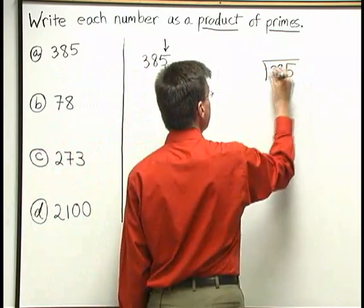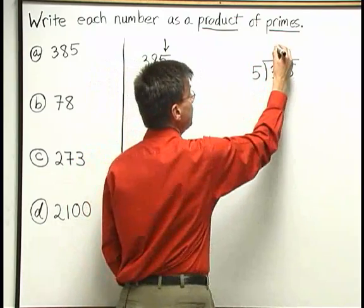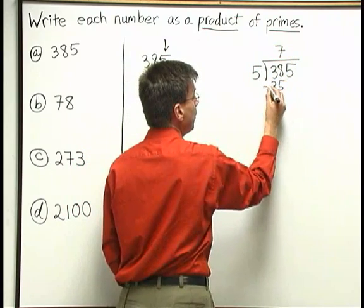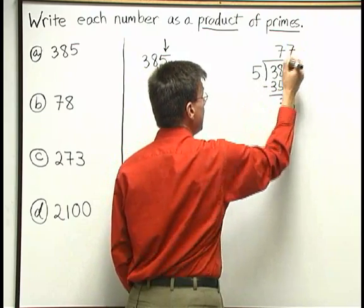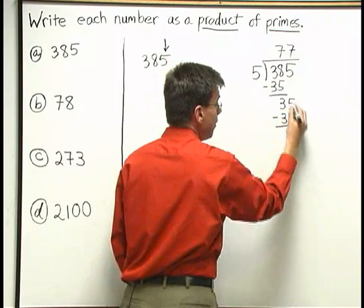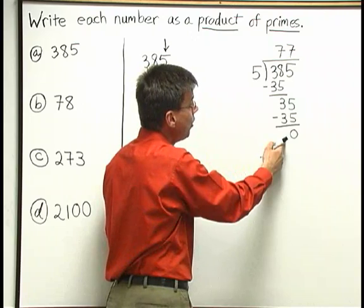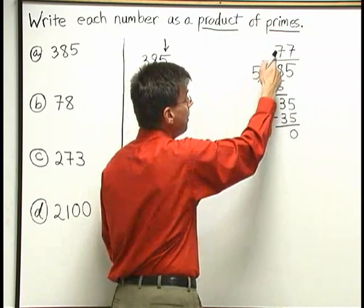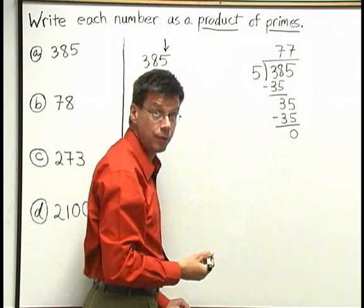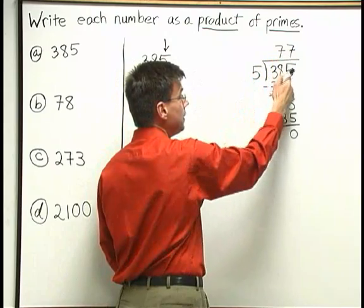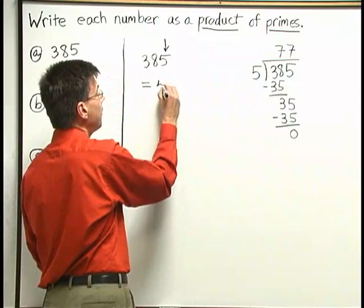385 divided by 5. 5 doesn't go into 3, but 5 goes into 38 seven times. 7 times 5 is 35. When I subtract, I get 3. Bring down the 5. 5 goes into 35 seven times again. 7 times 5 is 35. When I subtract, I get 0. Because I got a remainder of 0, I know that 5 times the answer to my division problem, 77, has to equal 385. So 5 times 77 equals 385, and I can get started breaking down 385 as 5 times 77.